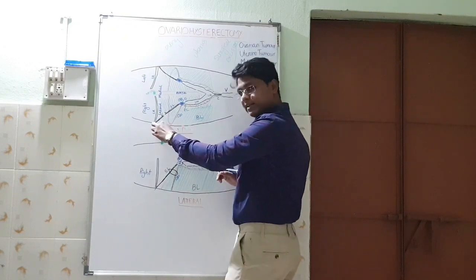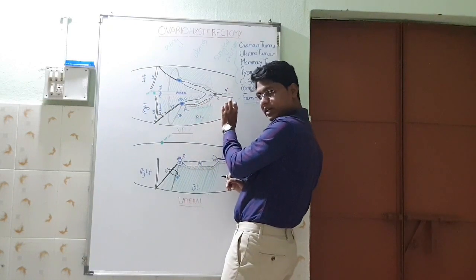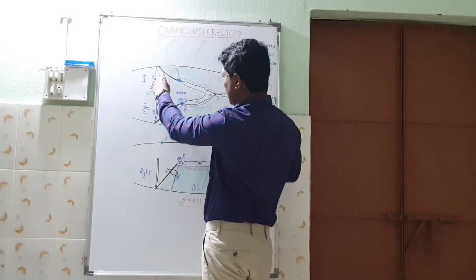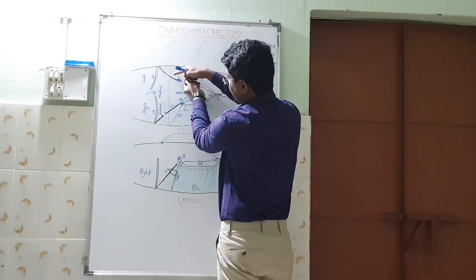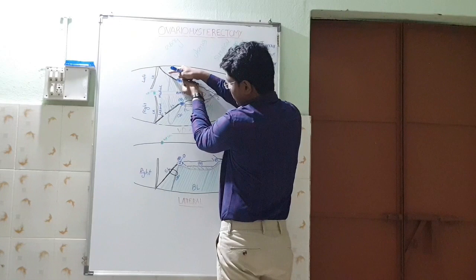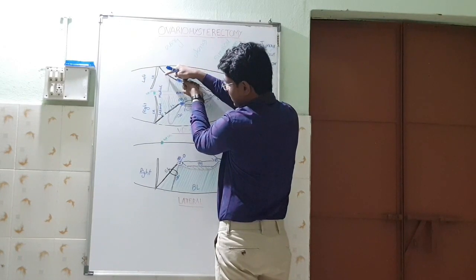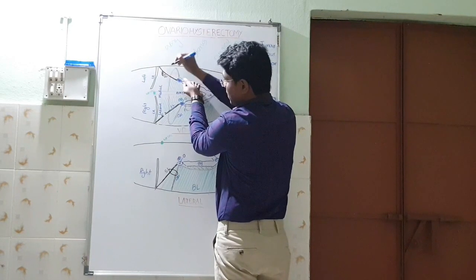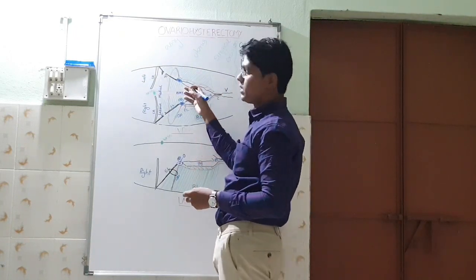Remember: lateral to medial on the suspensory ligament, proper ligament towards the caudal direction. The same procedure applies for the left suspensory ligament — hold in your left hand, move your index finger along the suspensory ligament a few centimeters, then apply lateral-to-medial pressure until it ruptures. This is the technique to rupture the suspensory ligament.